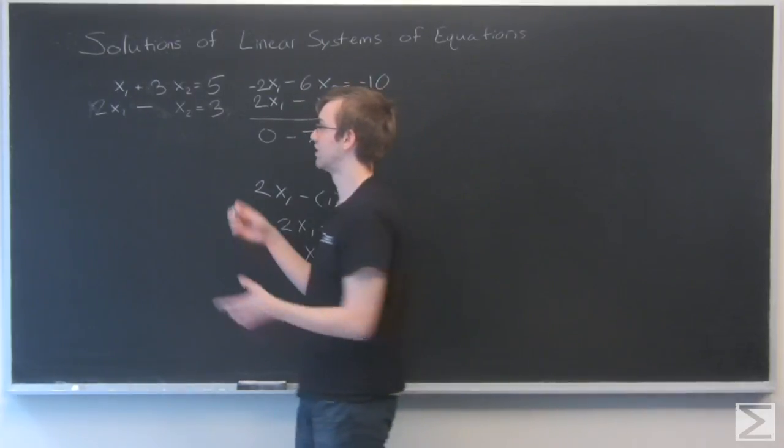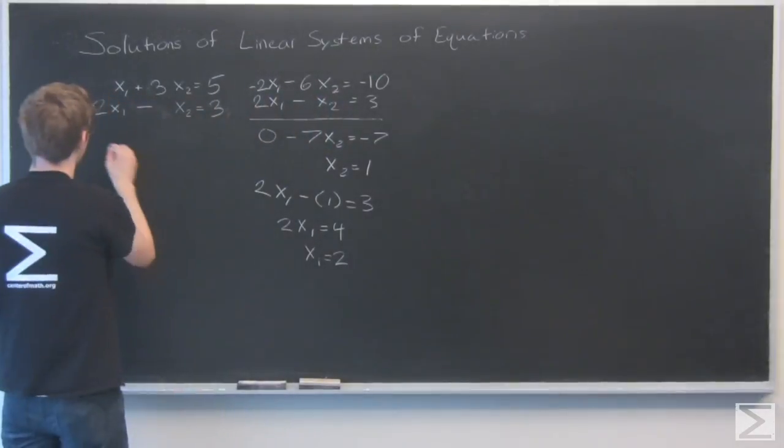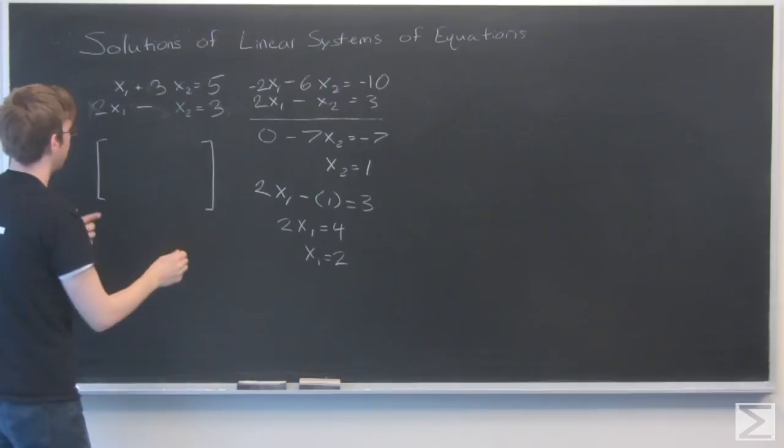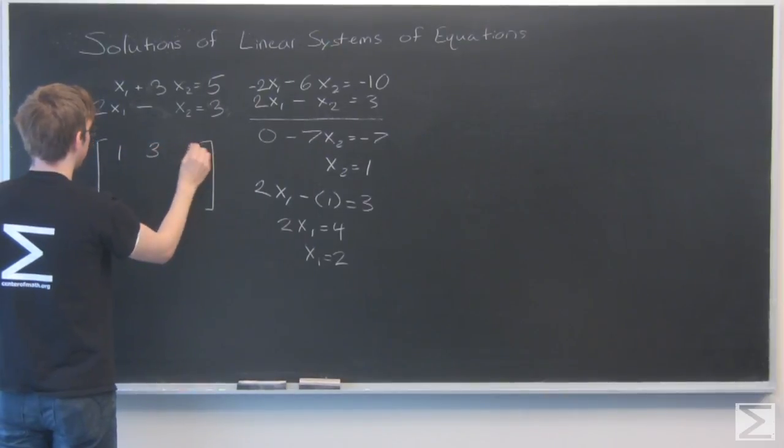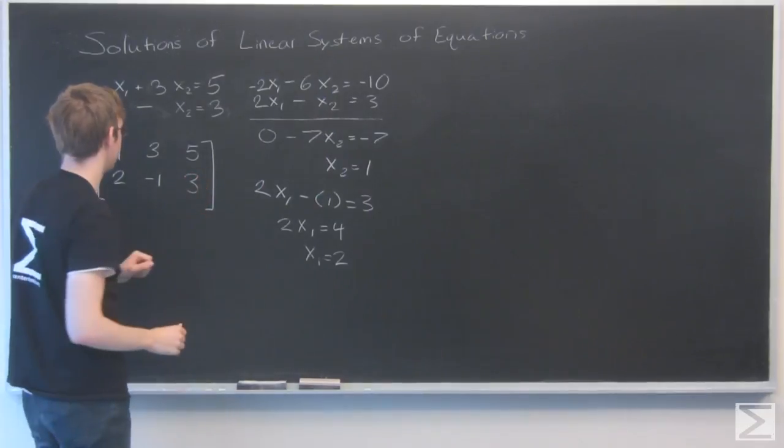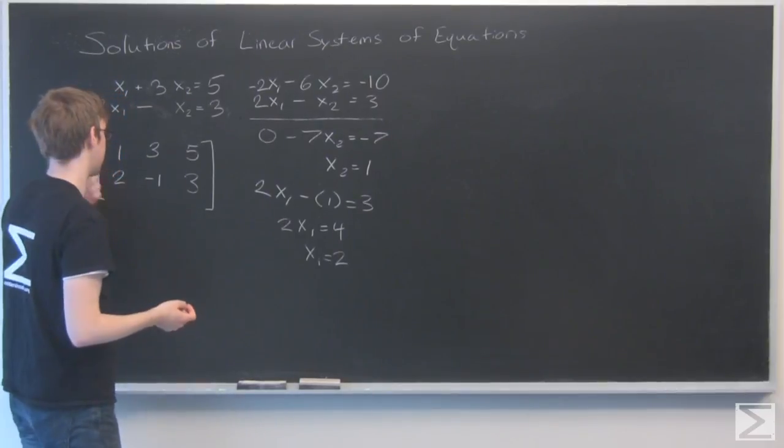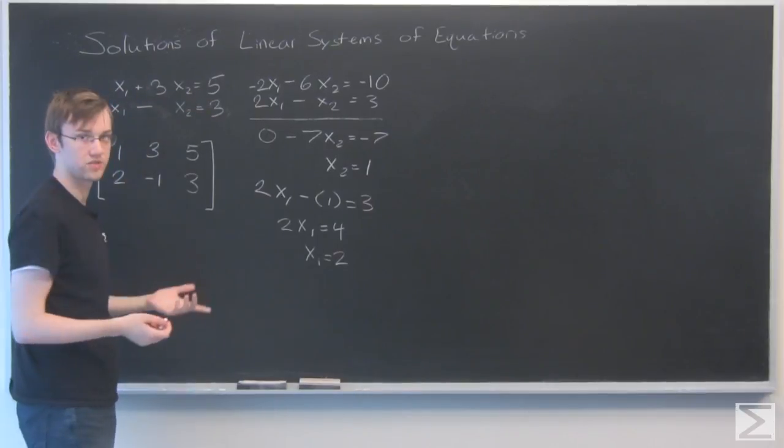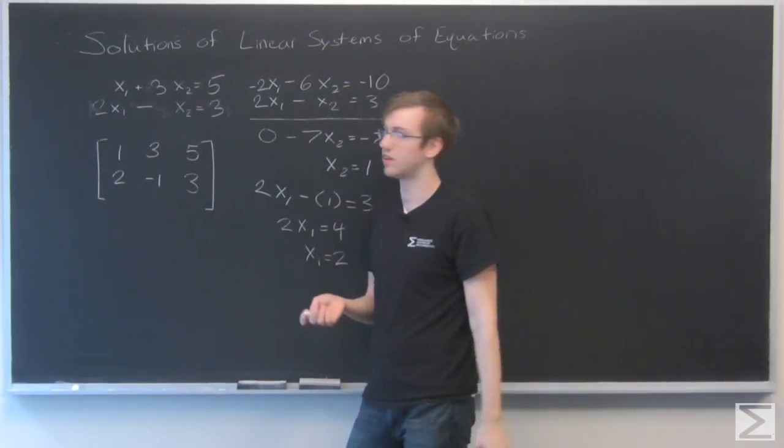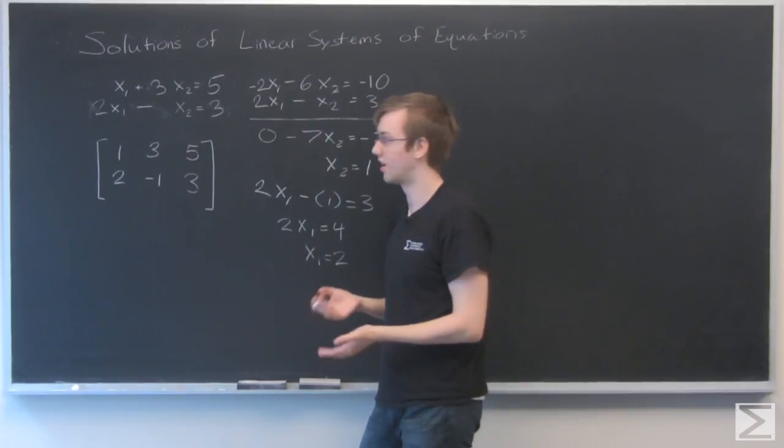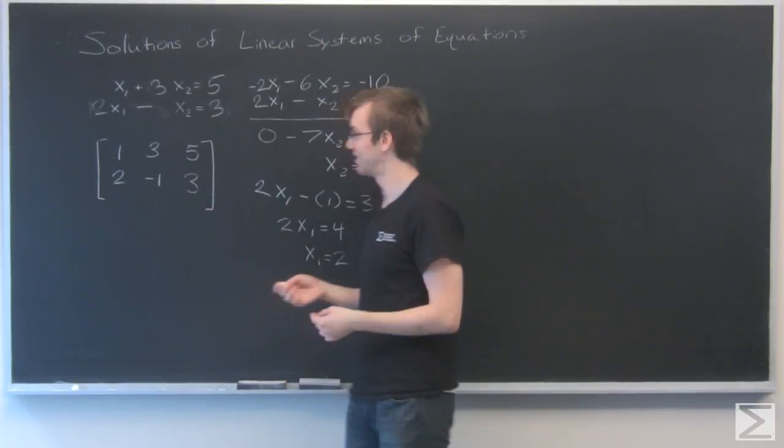So when you put this into a matrix, all you really do is you're covering up the variables and just writing the coefficients in the places of a matrix. So here, because this is 1x1 plus 3x2 equals 5, I would just write these coefficients 1, 3, and 5. And here I would just write 2, minus 1, and 3. And this basically corresponds to this system. And we can solve this system just by using the same operations we just did. I can multiply a row by a constant, switch around these rows, and I can also add rows to each other. So not really that scary.